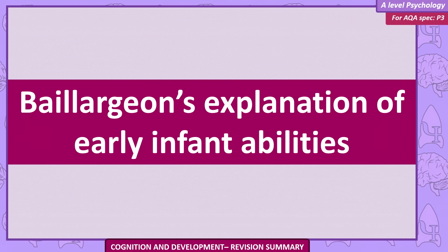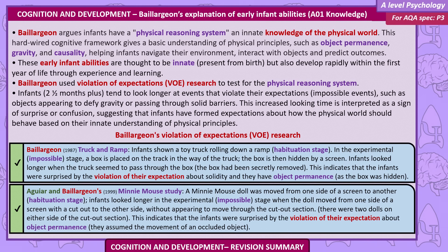Baillargeon's explanation of early infant abilities. Baillargeon argues that infants have a physical reasoning system — an innate knowledge of the physical world. This hard-wired cognitive framework gives a basic understanding of physical principles such as object permanence, gravity, and causality, helping infants navigate their environment, interact with objects, and predict outcomes. These early infant abilities are thought to be innate and present from birth, but also developed rapidly within the first year of life through experience and learning. Baillargeon used violation of expectations research to test for the physical reasoning system: infants two and a half months and older tend to look longer at events that violate their expectations — impossible events — such as objects appearing to defy gravity or passing through solid barriers.